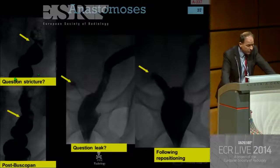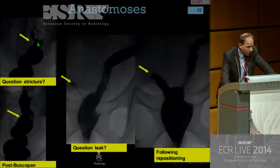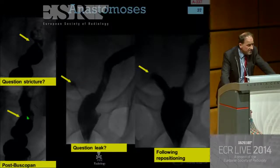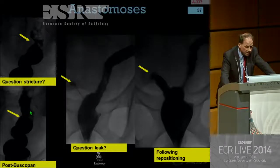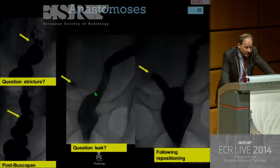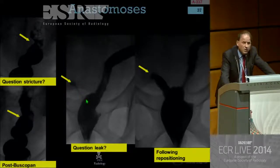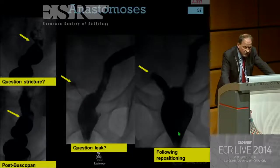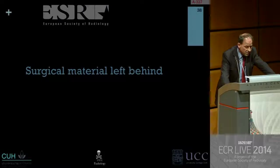In one case we wondered about a stricture and gave some Buscopan, confirming the anastomosis was clearly open. In a low anterior resection contrast enema, there was a small outpouching which worried us as a possible leak. We turned the patient 360 degrees and gave a little Buscopan, and this turned out to be an end-to-side anastomosis, not a leak.